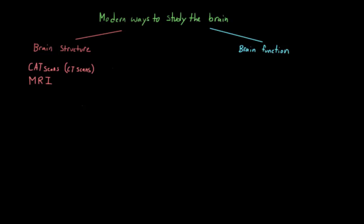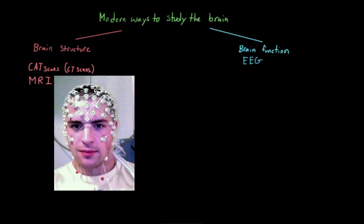For example, researchers can use electroencephalography, or EEG, in order to measure the electrical activity that is generated by neurons in the brain. This is done by placing electrodes on someone's scalp at predetermined positions, usually by using a cap with electrodes that are filled with a conductive gel. Unlike single cell recordings, these electrodes are not invasive. They don't have needles or anything. They're just placed right on the scalp.